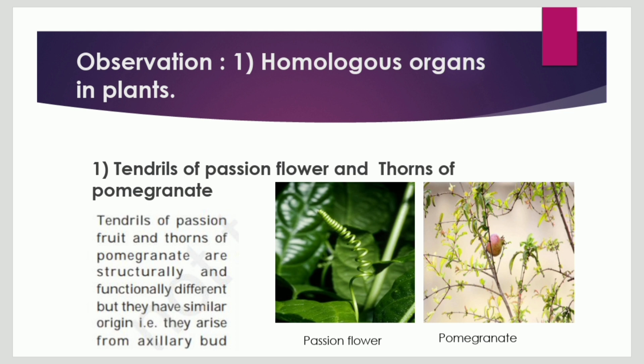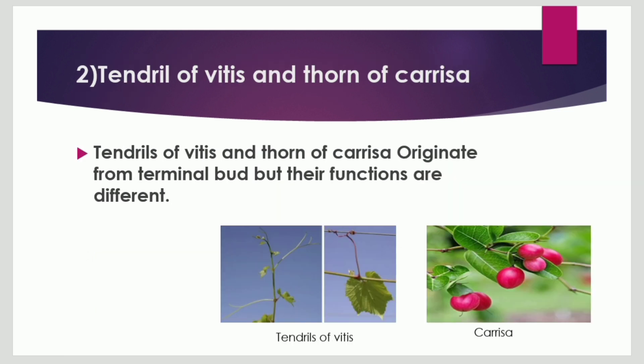First, homologous organs in plants. Examples are passion flower and pomegranate. Both have similar origin but they are structurally and functionally different — they arise from the same axillary bud. Second example: tendril of Vitis and thorn of Carissa originate from the terminal bud but their functions are different.